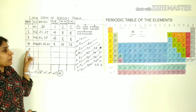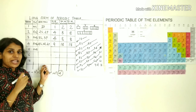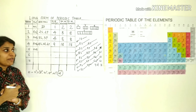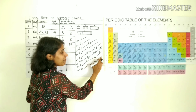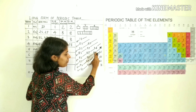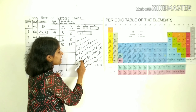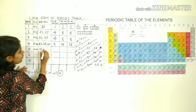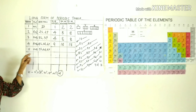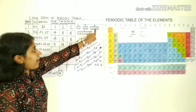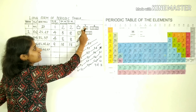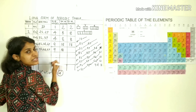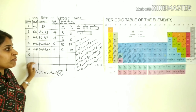The fifth period has n equal to 5. By Aufbau principle, the filling order is 5s, then 4d, then 5p. This gives 1 s-orbital, 5 d-orbitals, and 3 p-orbitals — 1 + 5 + 3 = 9 orbitals, 9 × 2 = 18 electrons, and 18 elements in the fifth period.